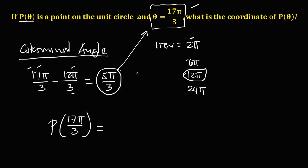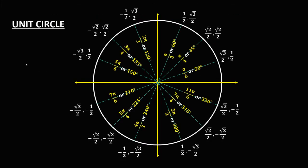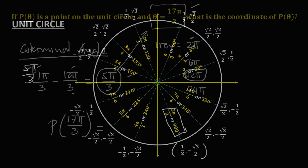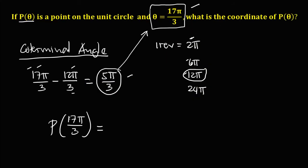From the unit circle, we locate 5π/3. Since 5π/3 equals 300 degrees, the coordinate at that point is (1/2, −√3/2). Therefore, the coordinate of P(θ) for θ = 17π/3 is (1/2, −√3/2).